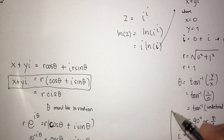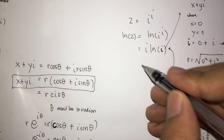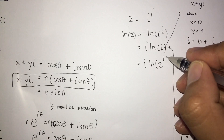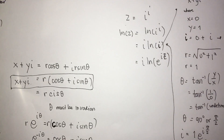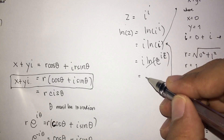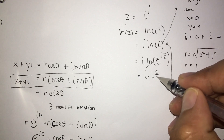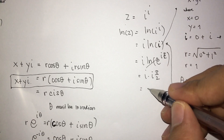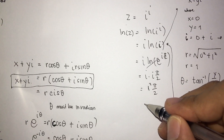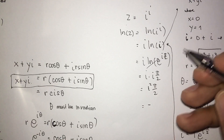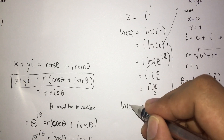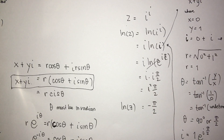Substituting this Euler's form of i into our expression, we have i times ln of e raised to i pi over 2. Using the laws of logarithm, this simplifies to i times i pi over 2, which equals i squared times pi over 2. Since i squared equals negative 1, we get negative pi over 2. Therefore, ln z equals negative pi over 2.